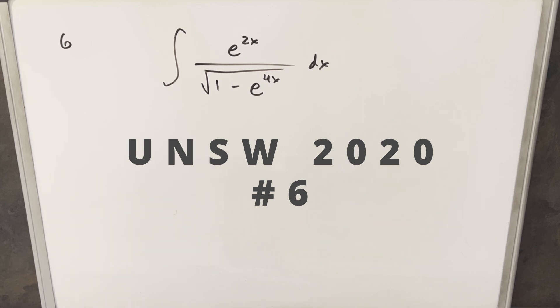We have the integral of e to the 2x over the square root of 1 minus e to the 4x dx.